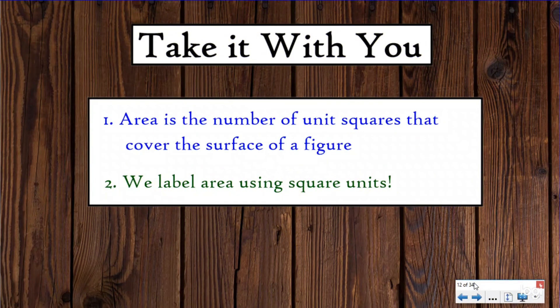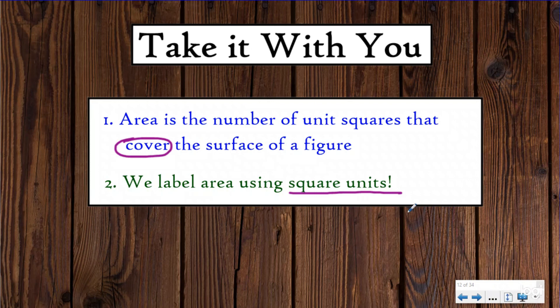Here are the two things we want you to take with you as you leave this lesson. Number one: area is the number of unit squares that cover the surface of a figure — 'cover' is a huge word for area. Number two: we label area using square units, because we want to recognize that we covered the shape with squares. So you say either 'square units' or 'units squared' after your number.